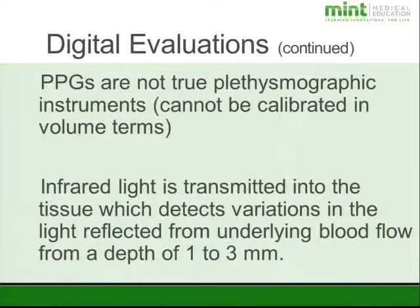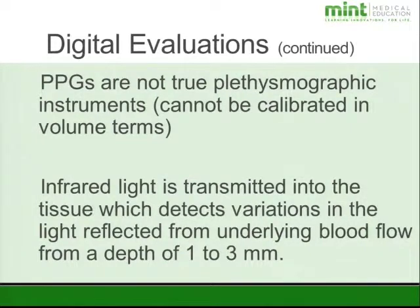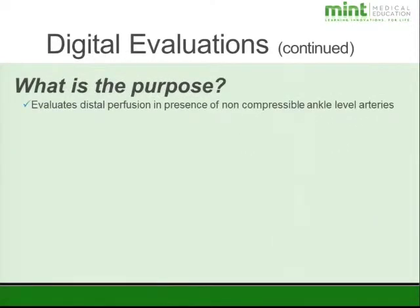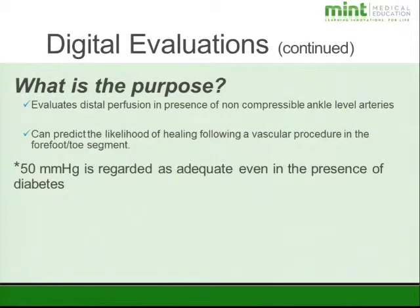The infrared light is transmitted, which detects the light reflecting from the movement of the blood cells. This is only from a depth of about 1 to 3 millimeters, so it doesn't go very deep, but PPGs are very sensitive to movement. We use this to evaluate distal perfusion if the patient has non-compressible vessels.